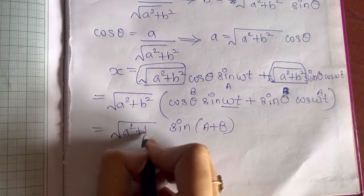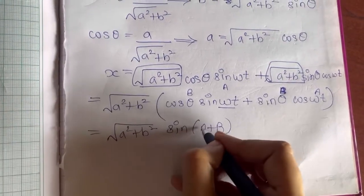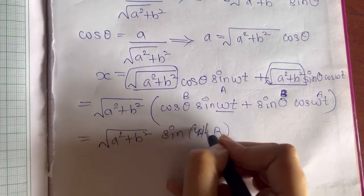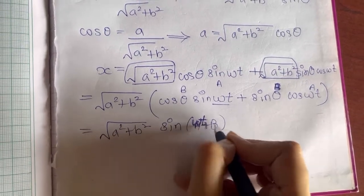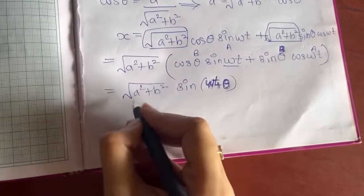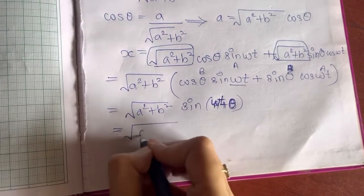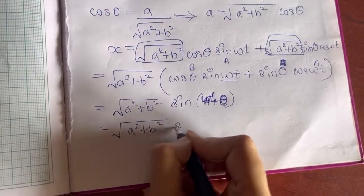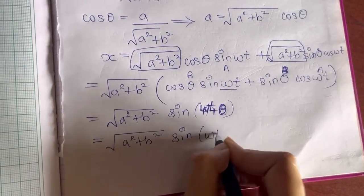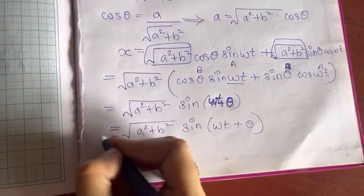The term outside bracket remains the same. So what is A? A is ωt, and what is B? That is θ. So √(a² + b²) sin(ωt + θ) is equal to x.